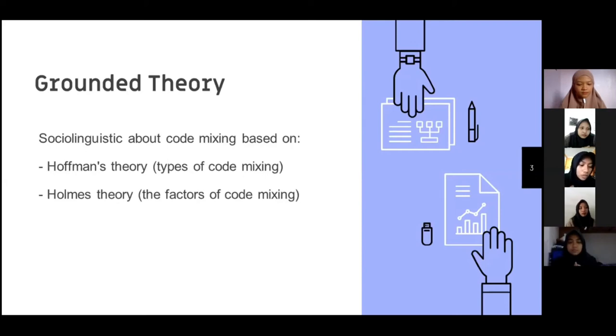And the fourth, formality dimension. Speakers will change the code based on the situation where the speakers have the conversation. So the features of the setting and the dimension of formality are important in selecting appropriate code. And the fifth, goal of interaction. Speakers must have a goal when interacting. For example, the speakers use code mixing so the conversation will be interesting or raise prestige. That's all for the grounded theory of this research.